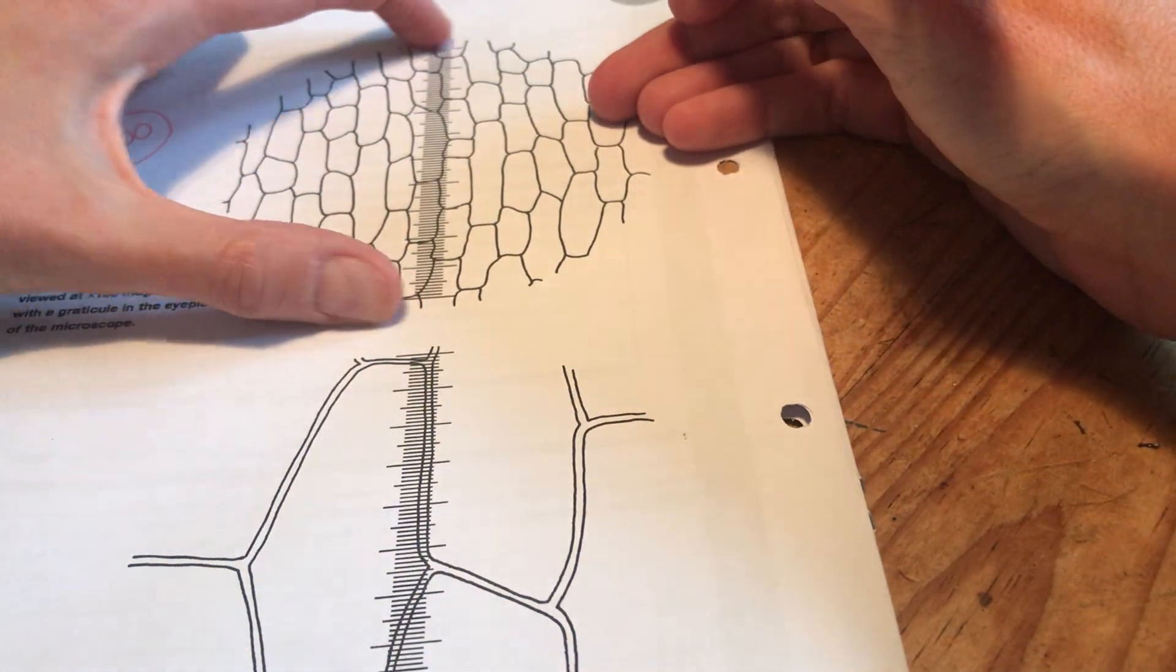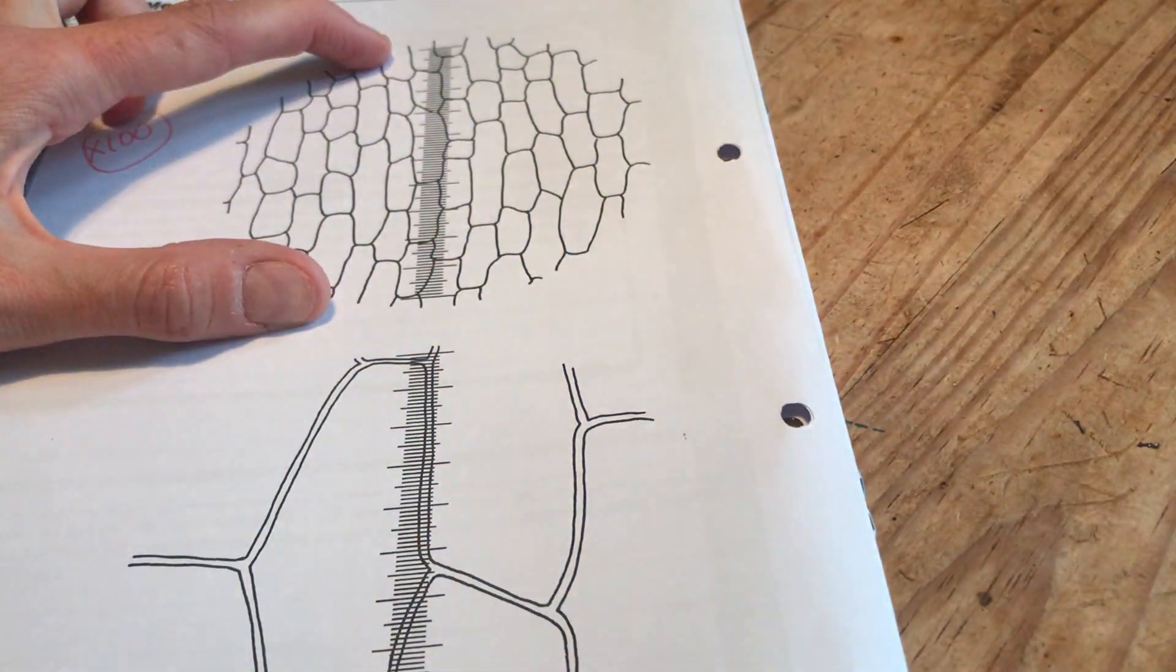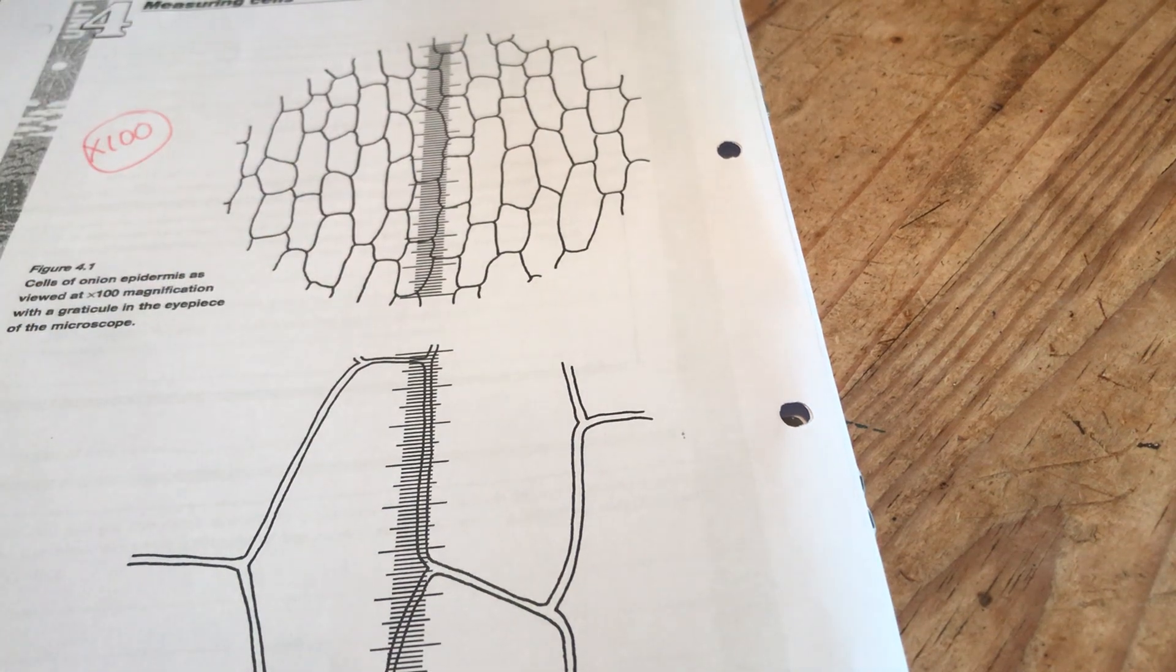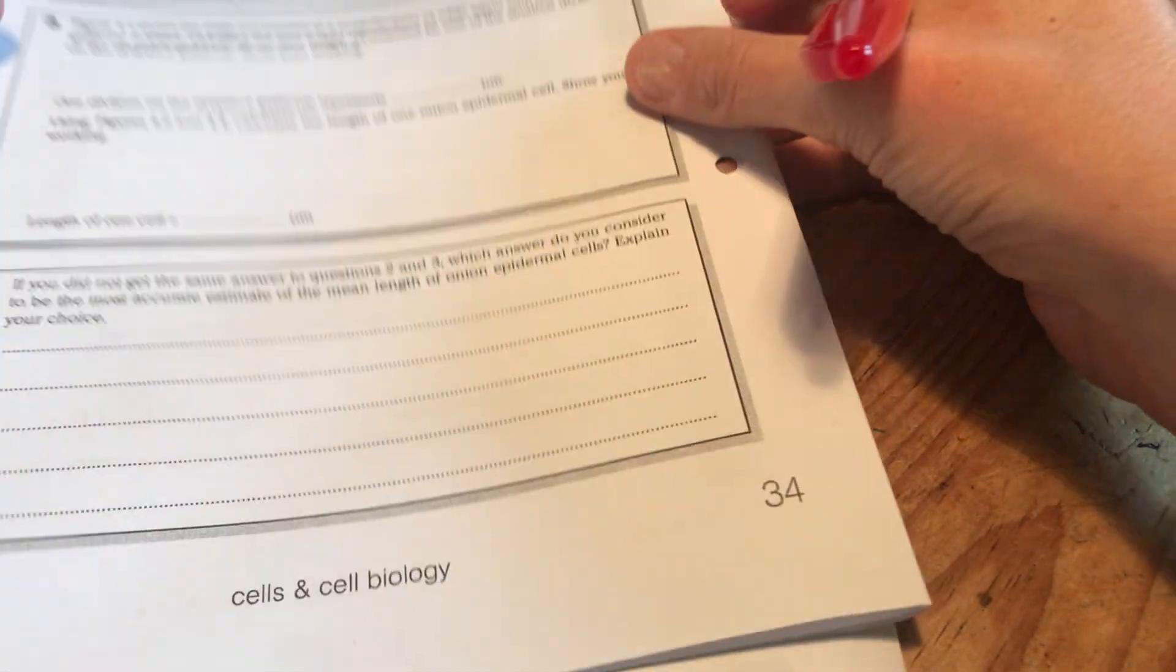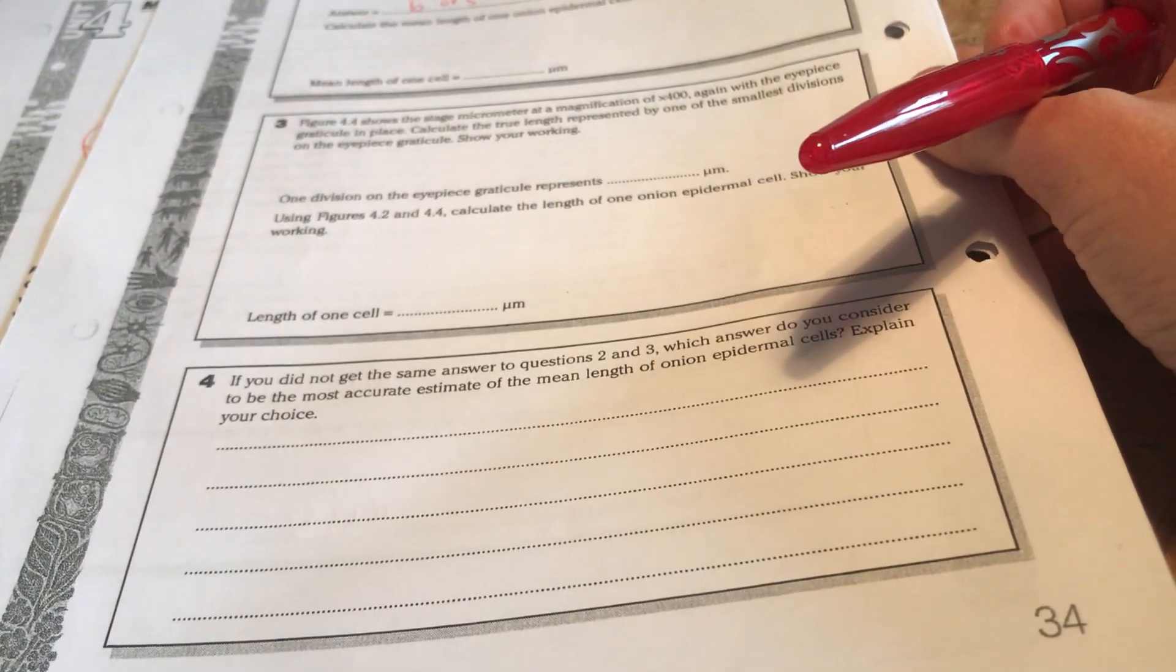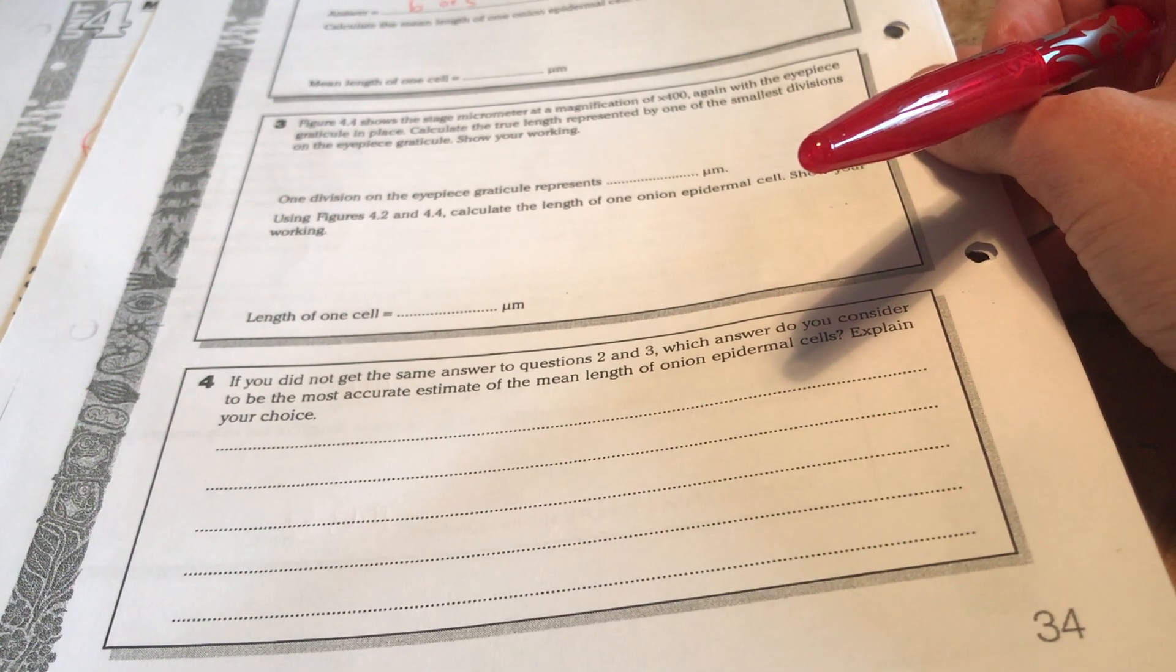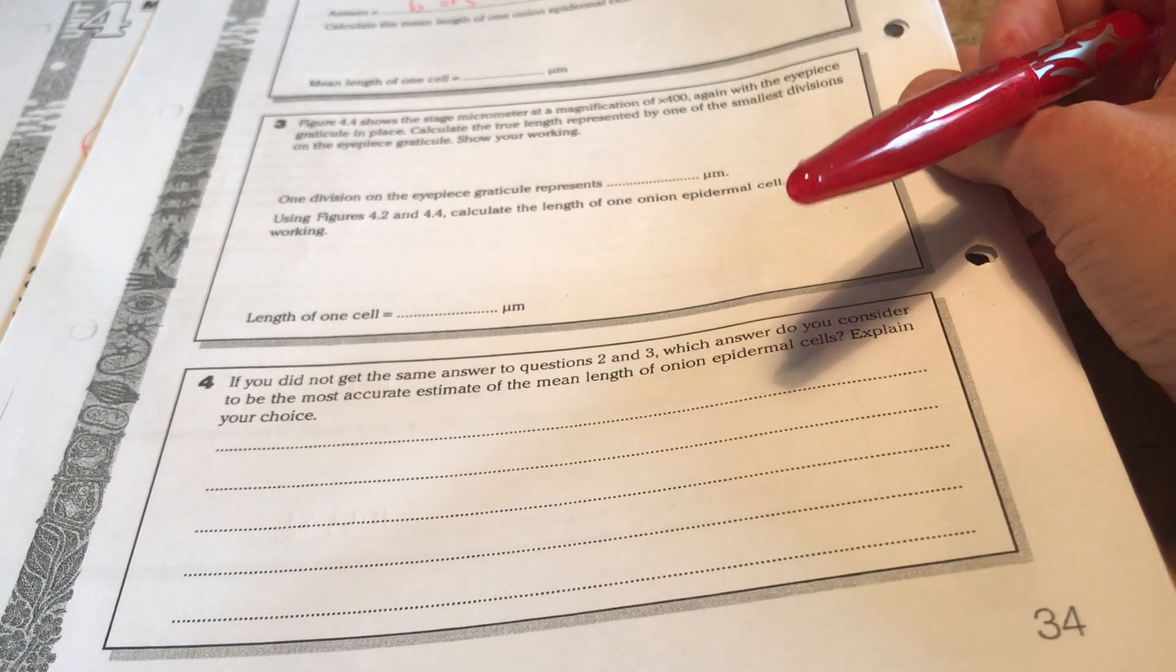Or if I was to move that mentally over somewhere else I might get a different number. It's because all the cells are very different lengths aren't they? So we're looking for an answer of somewhere in the region of five or six here for this answer. Now it says calculate the mean length of one onion epidermal cell. Show your working. You've got a few ways of approaching this.